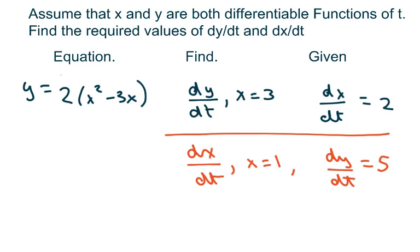Hi everyone. We're going to assume that x and y are both differentiable functions of t, and we're going to find the required values of the derivative of y and the derivative of x, both with respect to t. This is our equation, and the first thing I'm going to do is solve for the derivative of y, and then solve for the derivative of x, both with respect to t.